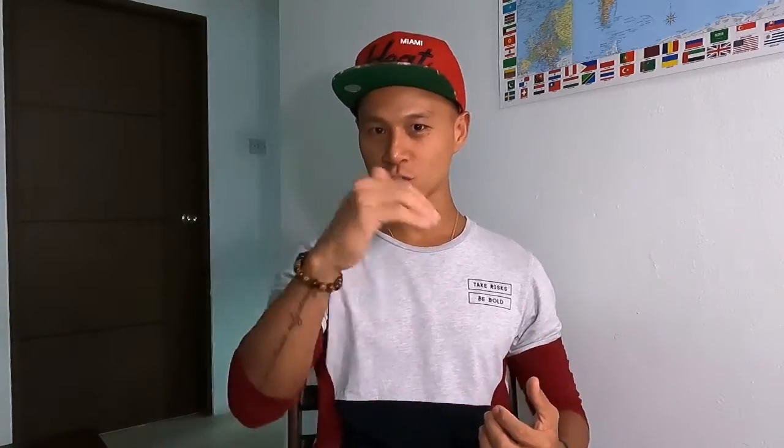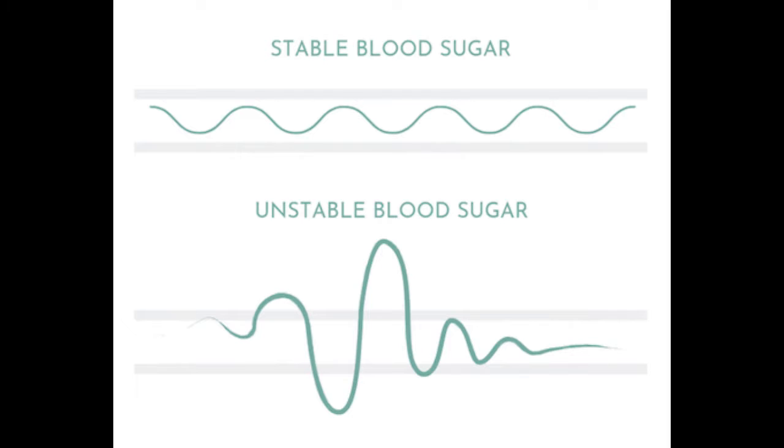Do you see that vicious cycle? Everything you eat on a standard diet triggers that blood glucose and insulin response. That is the reason why you feel that energy yo-yo — that roller coaster of energy up, energy down — and the cycle just goes on and on for many, many years of your life.